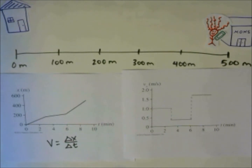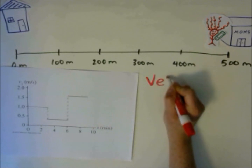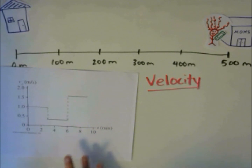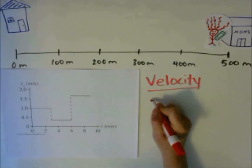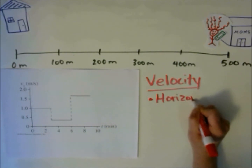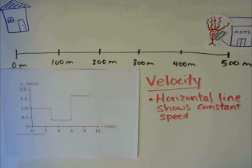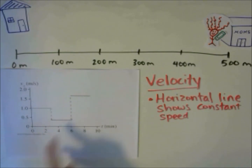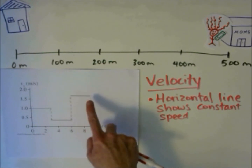Let's talk about velocity-time graphs and what they show us. The vertical axis shows the velocity of the object. The first thing we can note is that a horizontal line shows a constant speed. In this example, there is a constant velocity from 0 to 3 minutes, a constant velocity from 3 to 6 minutes, and a constant velocity from 6 to 9 minutes.